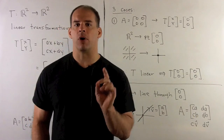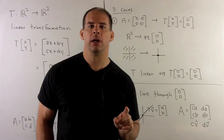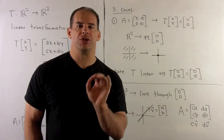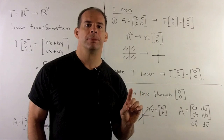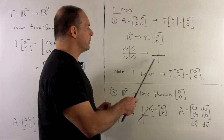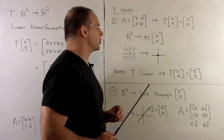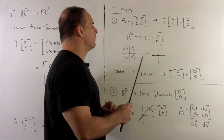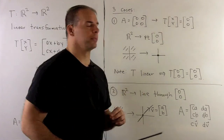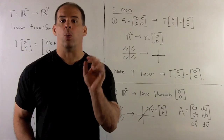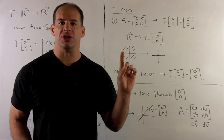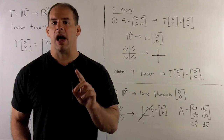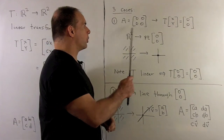In the first case, R2 is carried to a point. Because T is linear, it always carries the zero vector to the zero vector, so that point has to be the origin in R2. Since (1,0) and (0,1) are both carried to (0,0), they form the columns of A, and so A is just the zero matrix.